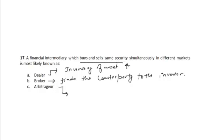The arbitrageur buys and sells the same security simultaneously in different markets. The role of an arbitrageur is very important from the market efficiency point of view, because if a security is overpriced or underpriced, the arbitrageur will help bring its price back to its normal or intrinsic value. So the role of the arbitrageur is to drive the market price of an asset or security towards its intrinsic value. The correct option is option C.